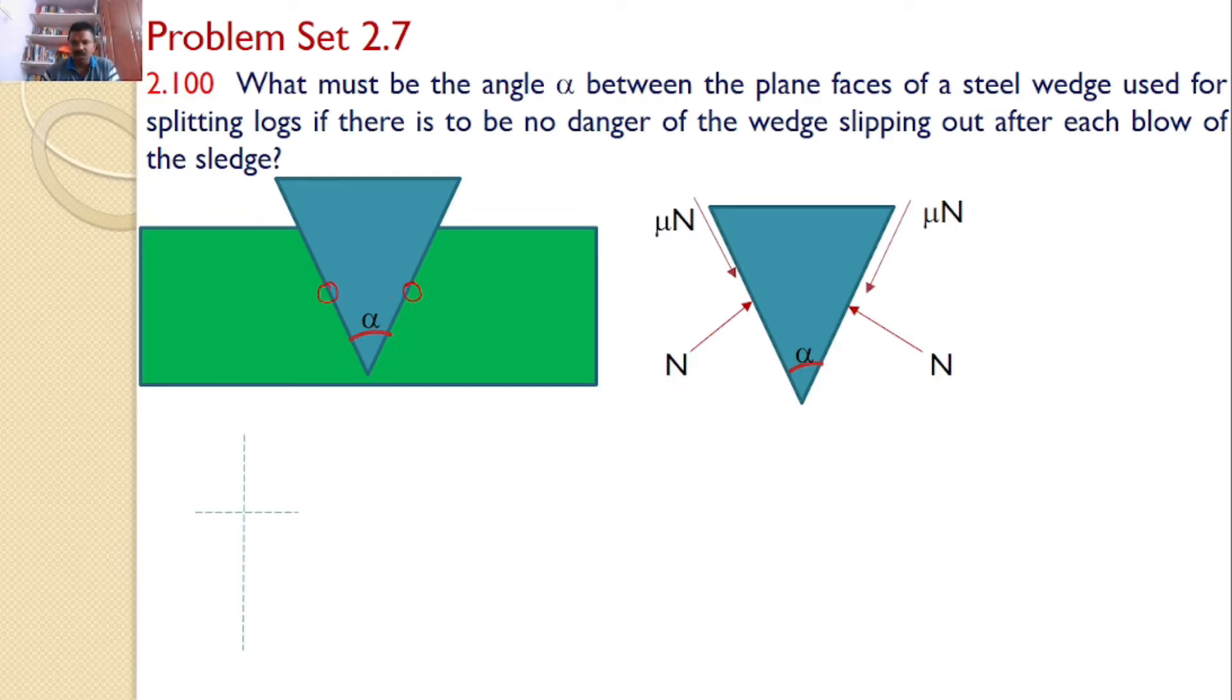Let us transfer all those forces onto a separate XY plane for easy analysis. First I am transferring this mu N and mu N, so these two forces are mu N and mu N. Next this force and this force N and N. Let these two forces are N and N. The point is we need to identify the angles made by these four forces along x-axis and y-axis.